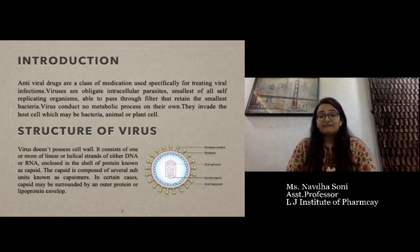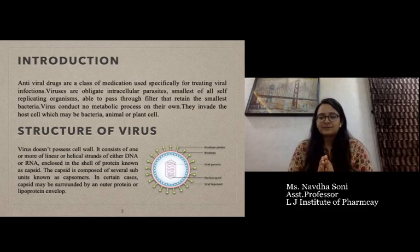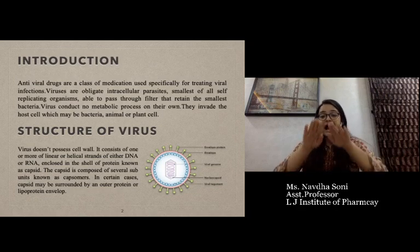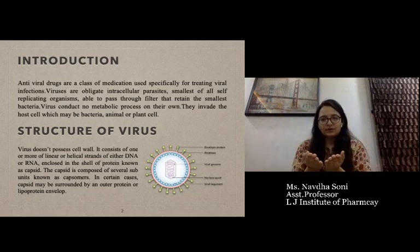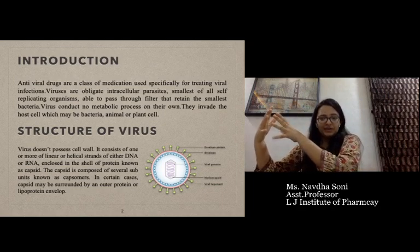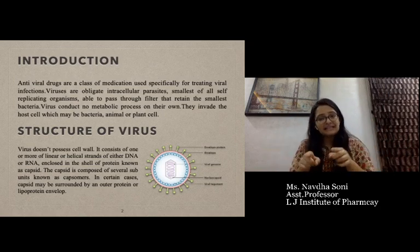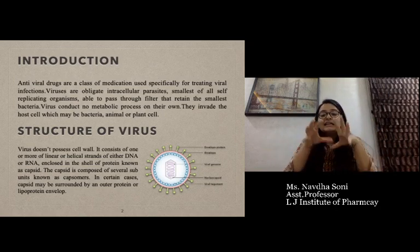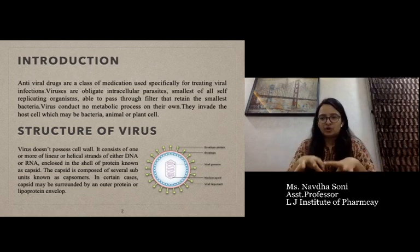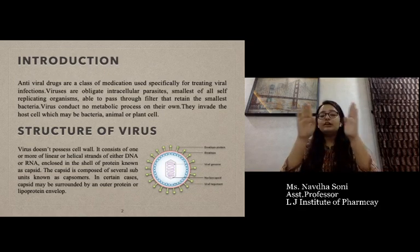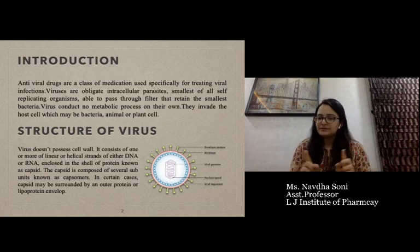If we want to develop antiviral drugs, we have to understand the structure of a virus. The structure of the virus is shown here. The outer part is an enveloped protein which adsorbs onto the host cell. There is an envelope known as the capsid. Inside that capsid, DNA and RNA along with other nucleic acid and genetic material are enclosed. The whole structure is enclosed within this capsule.